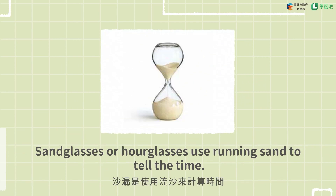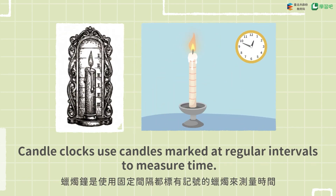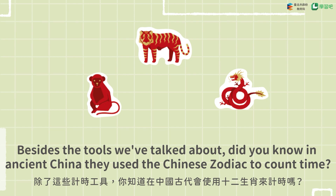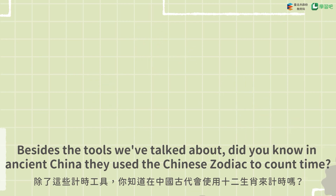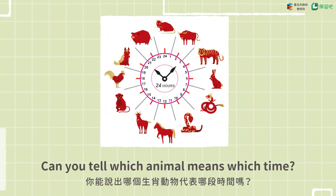Sand glasses or hour glasses use running sand to tell the time. Candle clocks use candles marked at regular intervals to measure time. Besides the tools we have talked about, did you know that in ancient China, they used the Chinese zodiac to count time? Each animal indicates a specific two hours in a day. Can you tell which animal means which time?